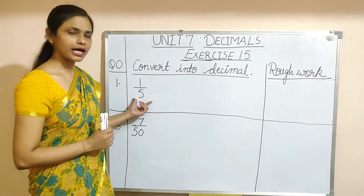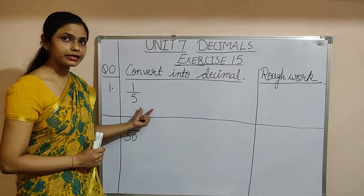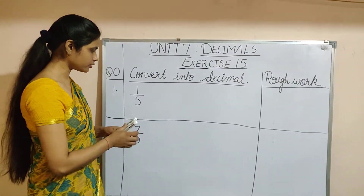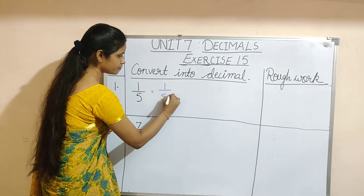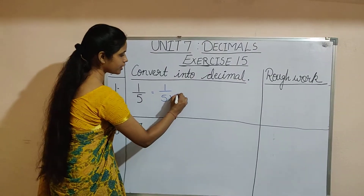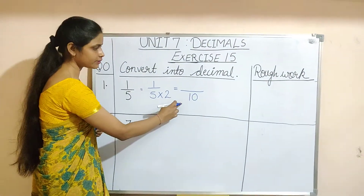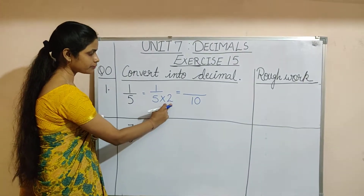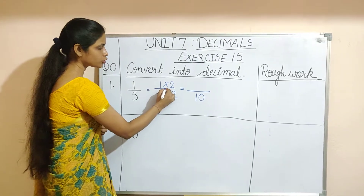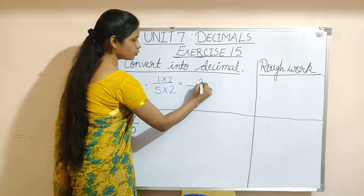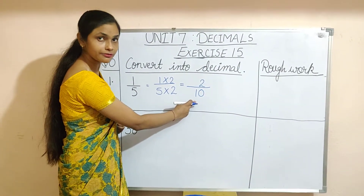Here you have 5. Can you make 5 into 10? Yes, we can make it by multiplying it by 2. So if we multiply here, we can write it like this: 1 by 5. If we multiply the denominator by 2, we will get the denominator in terms of 10. That will become the decimal fraction.